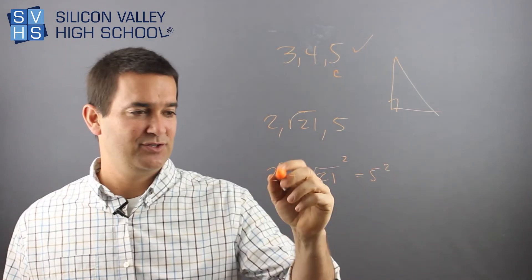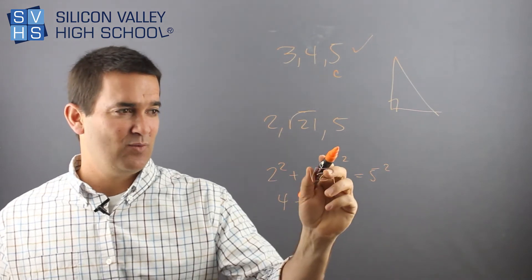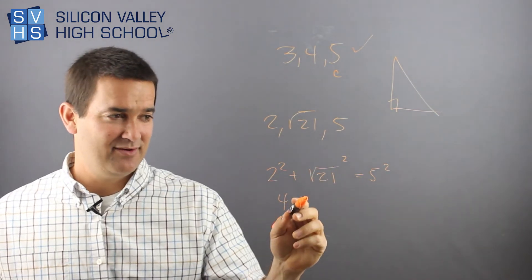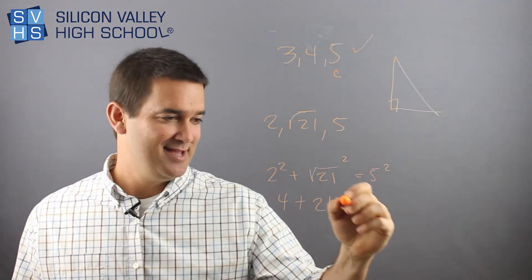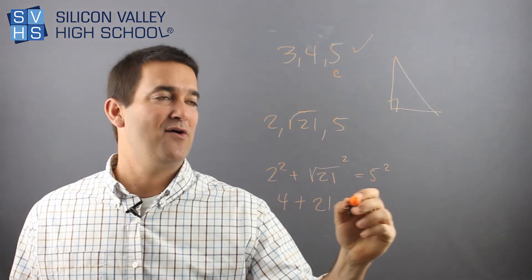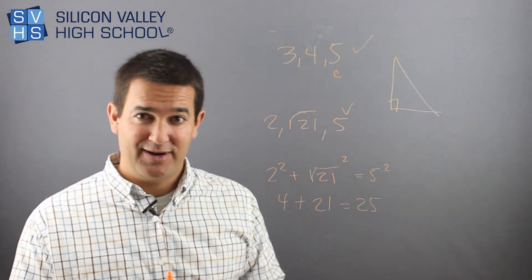And this is easier than you think. Two squared is four. Anytime you have a root and then it's squared, the inside just comes out. So root 21 squared would just be 21. That's a pretty cool trick. Equals 25. Oh, totally. That totally works. That is, those are the lengths of a right triangle.